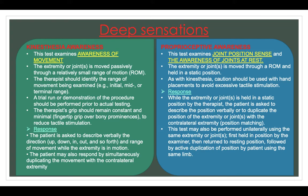Proprioceptive awareness: this test examines joint position sense and awareness of joints at rest. The extremity or joint is moved through a range of motion and held in a static position. As with kinesthesia, caution should be used with hand placement to avoid excessive tactile stimulation. Response: while the extremity is held in a static position, the patient is asked to describe the position verbally or to duplicate it with the contralateral extremity — i.e., position matching. This test may also be performed unilaterally: the examiner holds the position, returns the limb to resting, then the patient actively duplicates the position using the same limb.